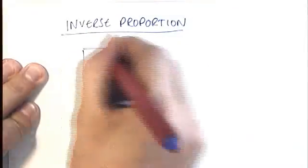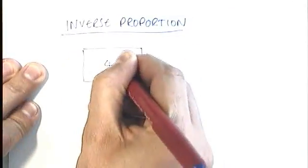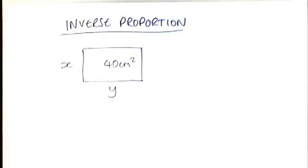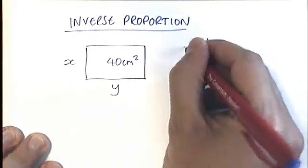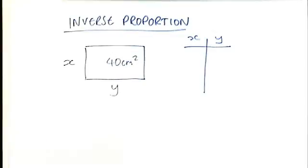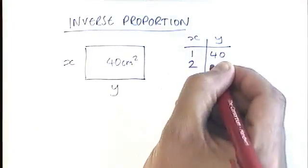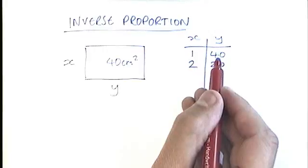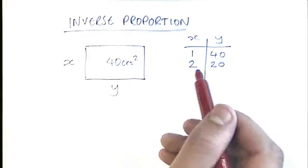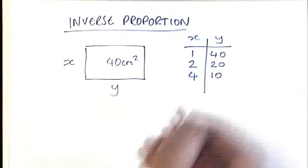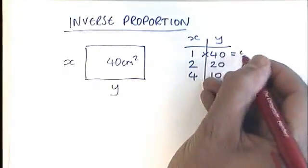I'd like you to think about a rectangle whose area is 40 centimeters squared. I'd like you to try and think of heights and widths for that rectangle. Could you come up with pairs of numbers that could make an area of 40 centimeters squared? I hope that you can see that 1 and 40 would make an area of 40, 2 and 20, 4 and 10. The key thing to make an area of 40 is that your numbers have to multiply to make 40.